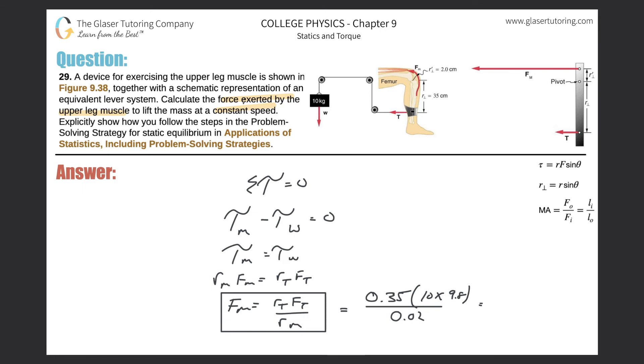Considering sig figs, probably two sig figs, so 1.7 × 10³ newtons. That will be the force that the quadriceps produces.